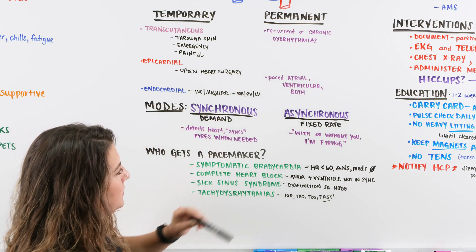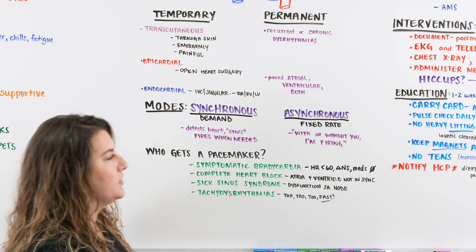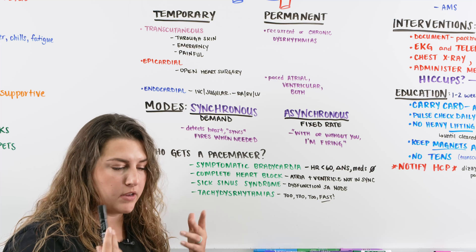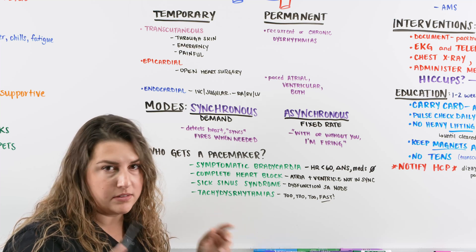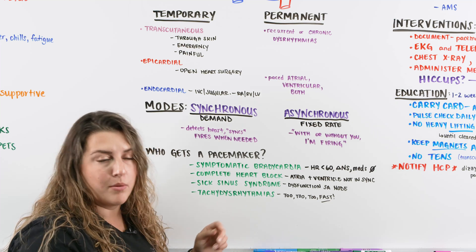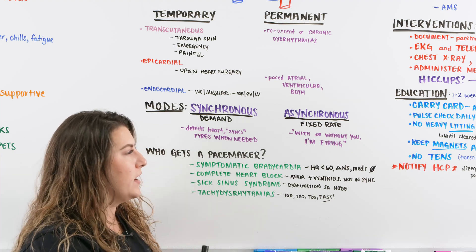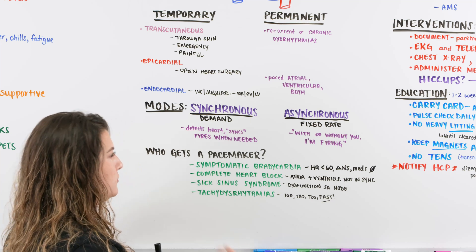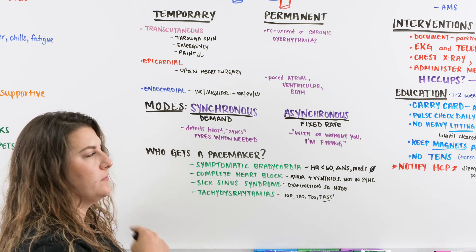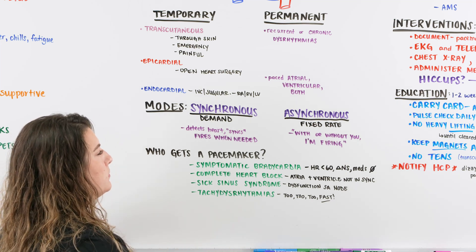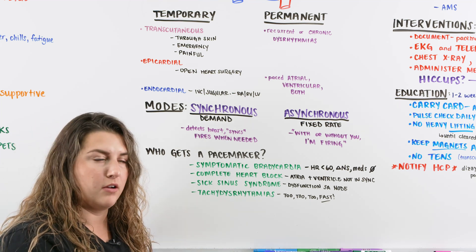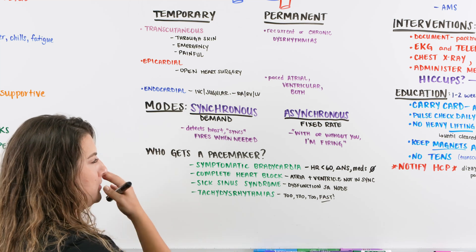Then we have asynchronous. Asynchronous is our fixed rate, meaning with or without you, I'm going to be firing. The pacemaker is like, I don't know what you're doing, but it's not working for us here. So I'm going to set the pace and it's going to continuously fire. The asynchronous is the fixed rate, it's just going to fire on its own where synchronous is going to sync with the heart. It's going to sync with the heart to find out the beat and then decide whether it's going to fire or not.